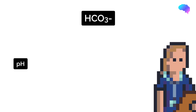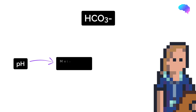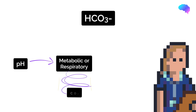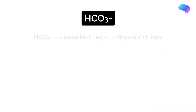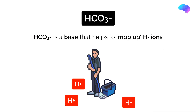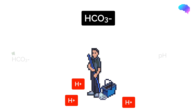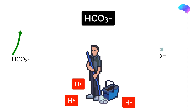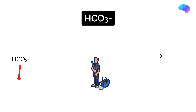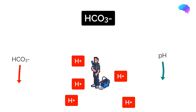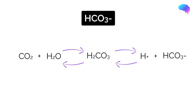We now know the pH and whether the underlying problem is metabolic or respiratory in nature from the CO2 level. Piecing this information together with the HCO3, we can complete the picture. HCO3 is a base which helps mop up acids or hydrogen ions. So when the HCO3 is raised, the pH is increased as there are fewer free hydrogen ions — alkalosis. When HCO3 is low, the pH is decreased as there are more free hydrogen ions — acidosis. Again, we can see this demonstrated in the carbonic acid equation.